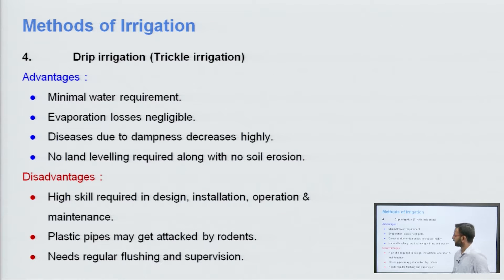Yadhi hum baat karayi advantages ki, toh yaha peh dekhye ga minimum water requirement is there. Second point evaporation losses are negligible. Evaporation loss aapko tab dekhne ko milta hai jab aapke paas field mein bohut jada paani zama ho. Yaha peh evaporation losses are negligible. Third point is kiunki paani zama nahi ho ta hai is liye diseases due to dampness they decrease highly. Fourth point is that no land leveling is required along with no soil erosion. Leveling is liye karnei padhti hai ki paani jo hai ek point se duosre point tak khet mein pohonj jaya but yaha peh asa koji zoroat nahi padhaegi because water is being supplied under pressure.